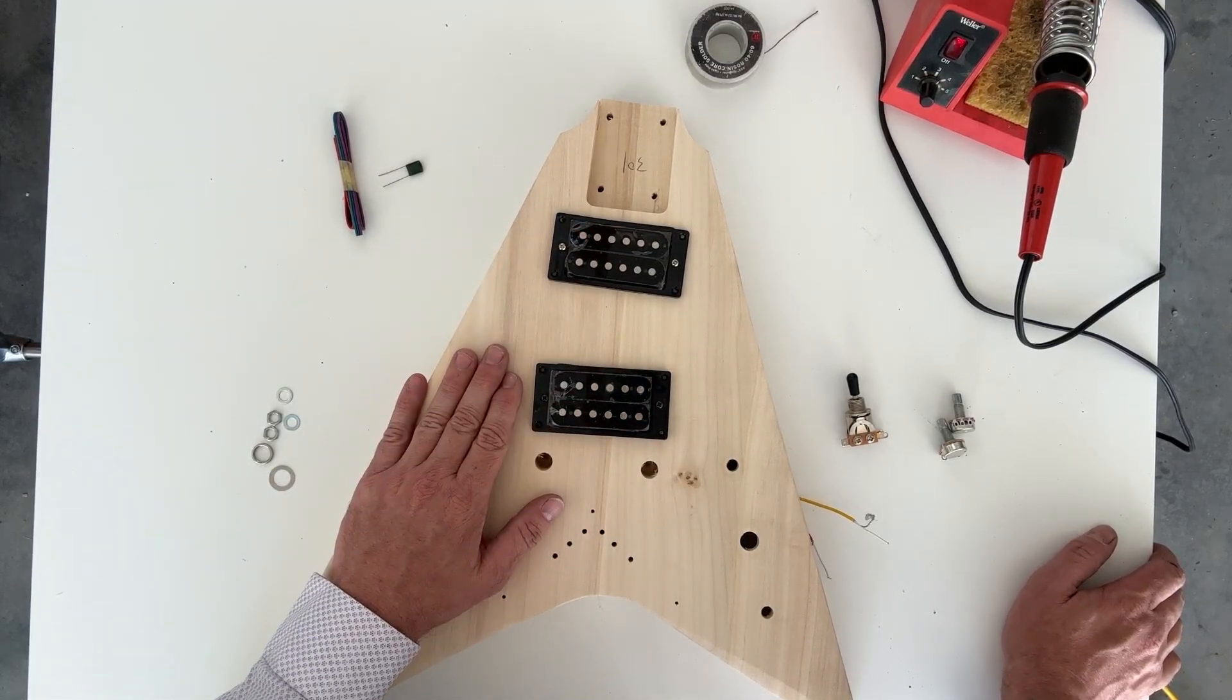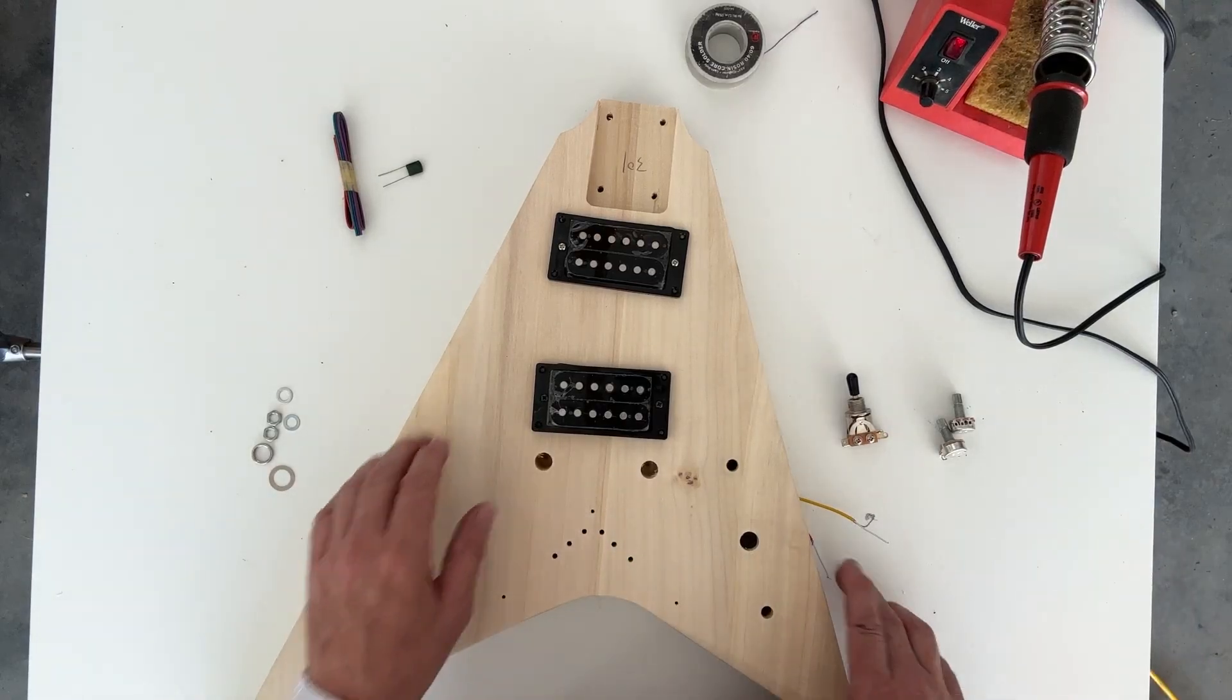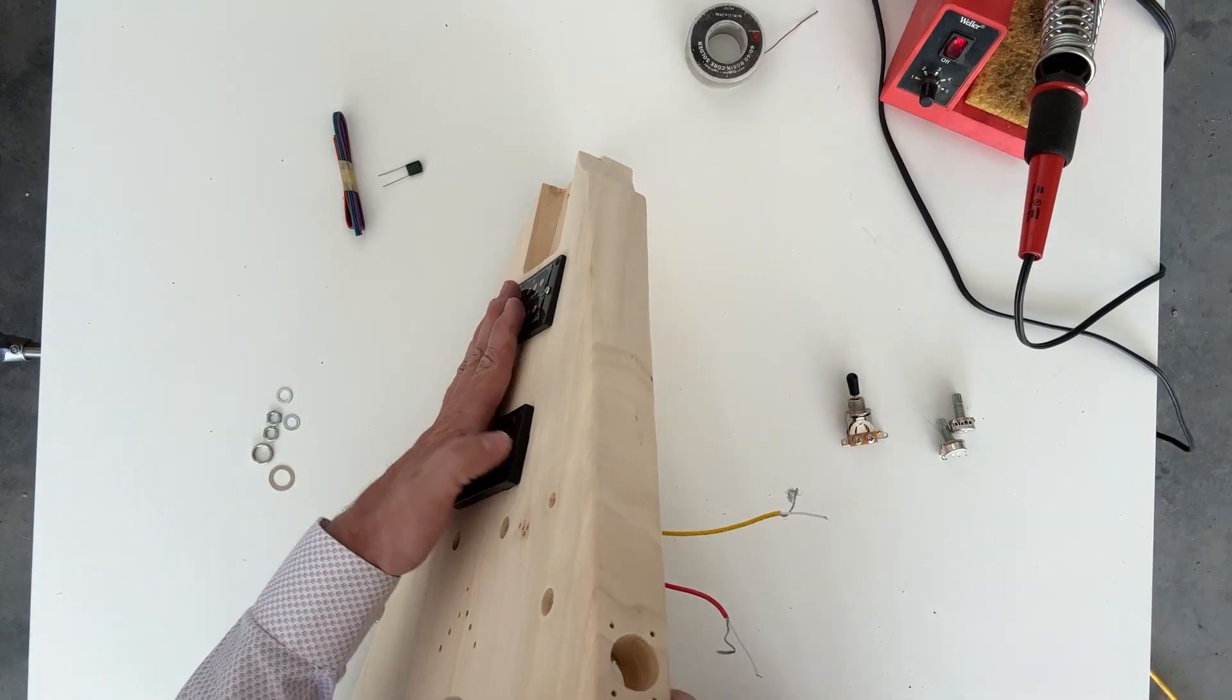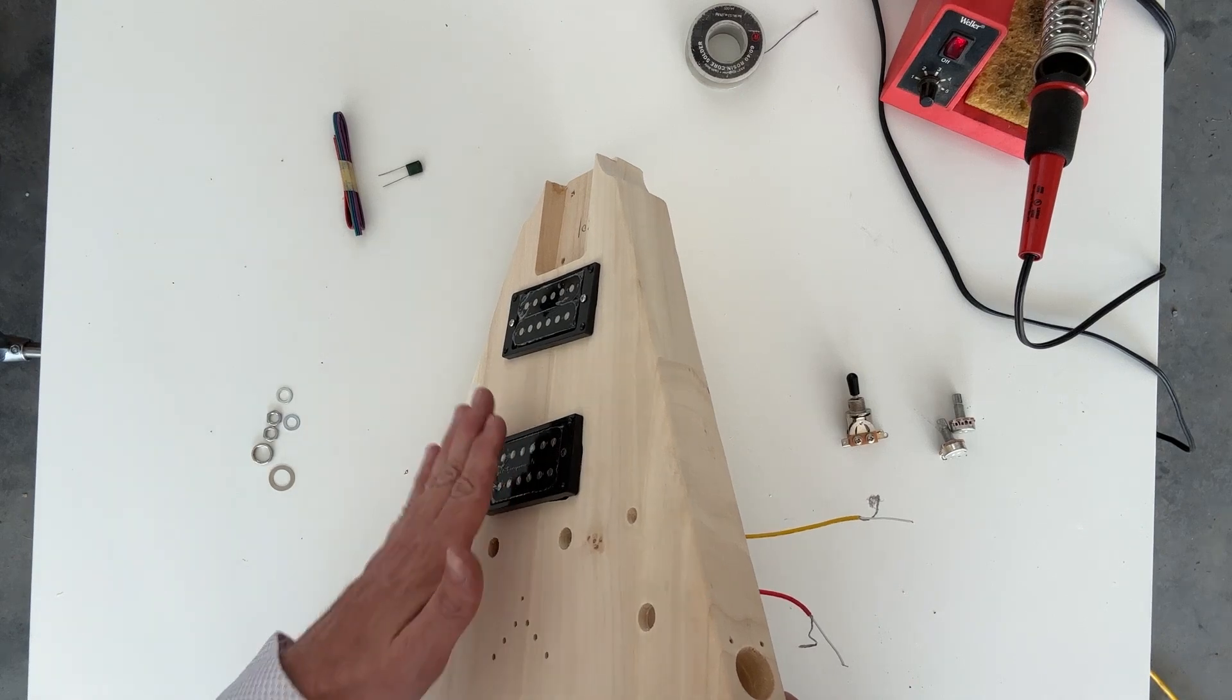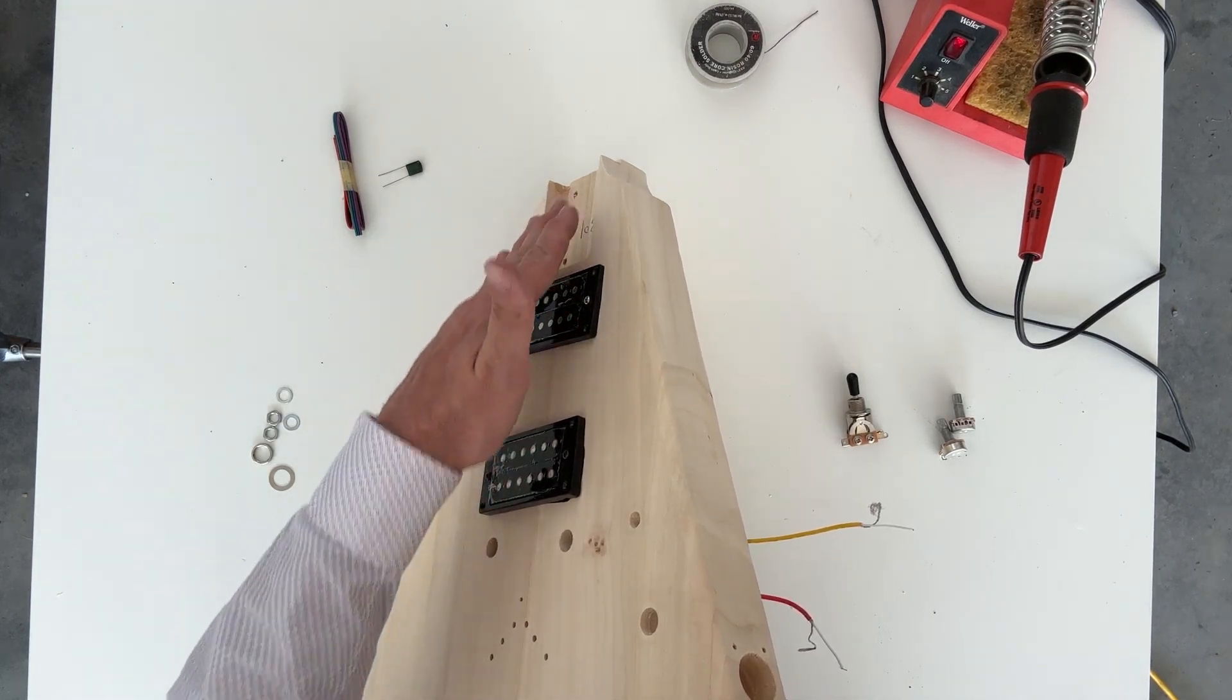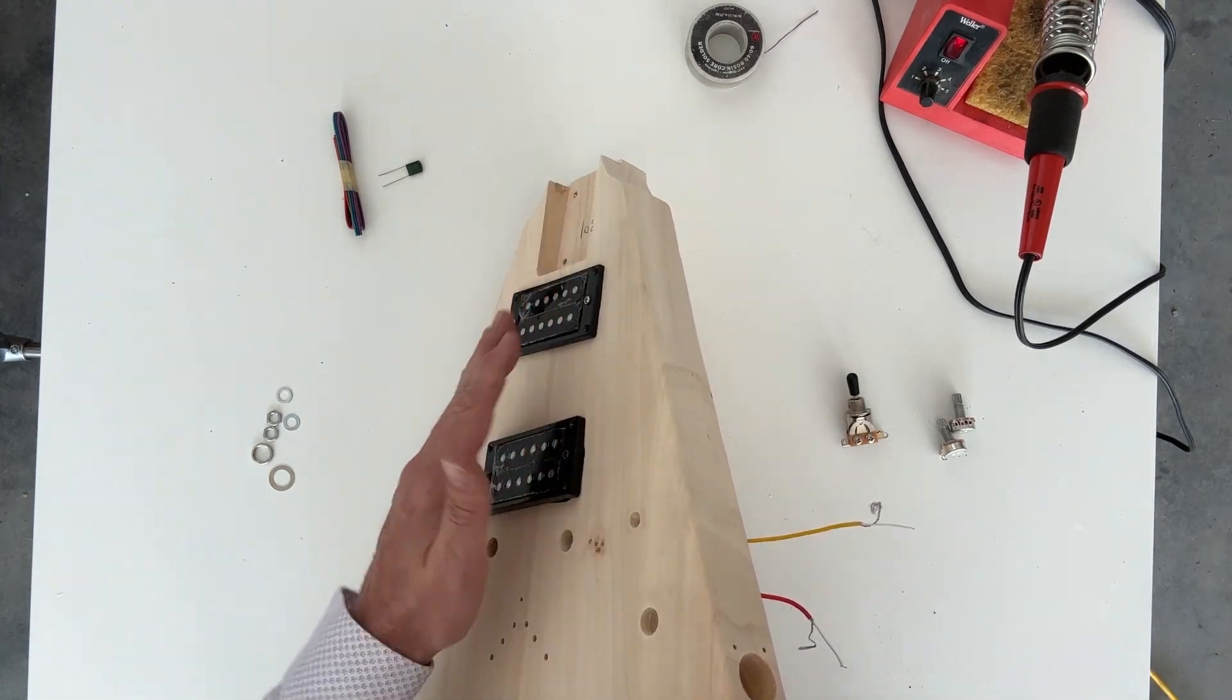We're going to start by putting the pickups in position and feeding their wires through the channels to the control cavity. One tip on this: the taller pickup ring goes towards the bridge position, and the shorter one goes towards the neck, slanting downwards toward the neck.